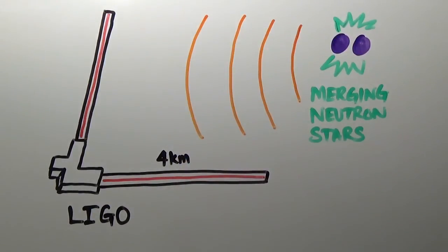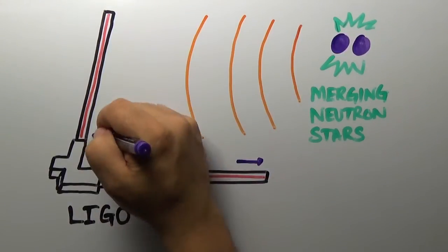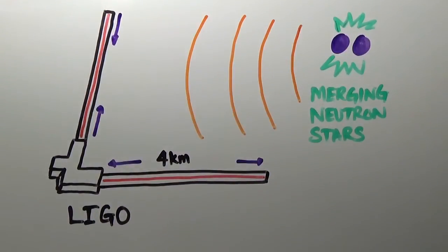When the gravitational waves from this cataclysmic event wash across LIGO, they will stretch and compress the arms, an effect that can be detected with the circulating laser light.